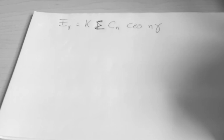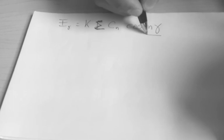What we have is an E_gamma equal to a constant K and the sum of C_m times the cosine of n times gamma. These gamma values represent certain angles, and the way this is going to look—because it's a cosine—it should start at the maximum and oscillate.